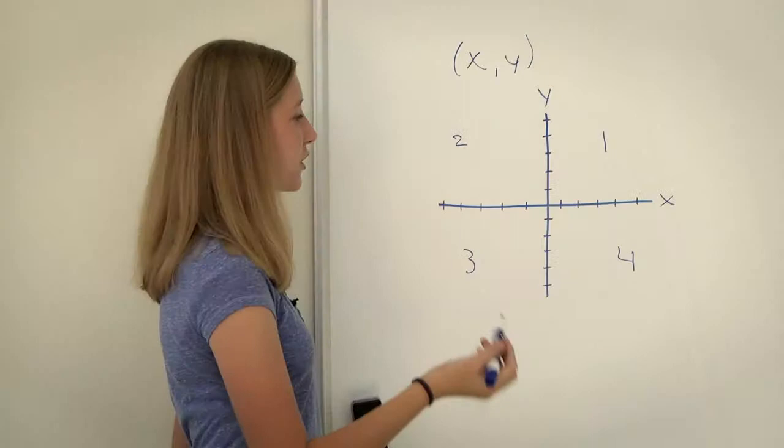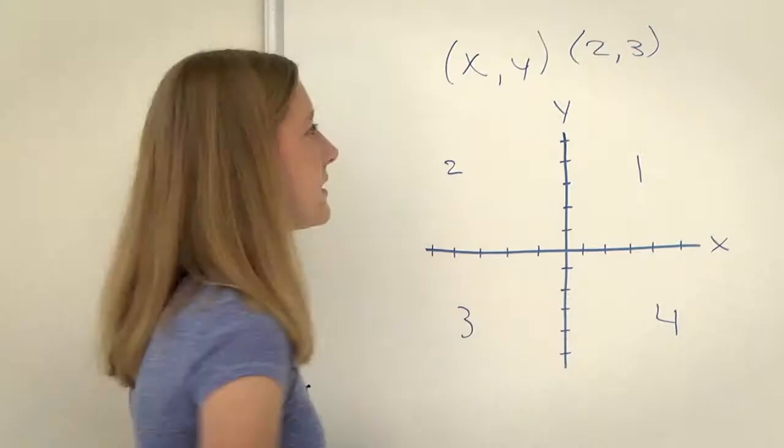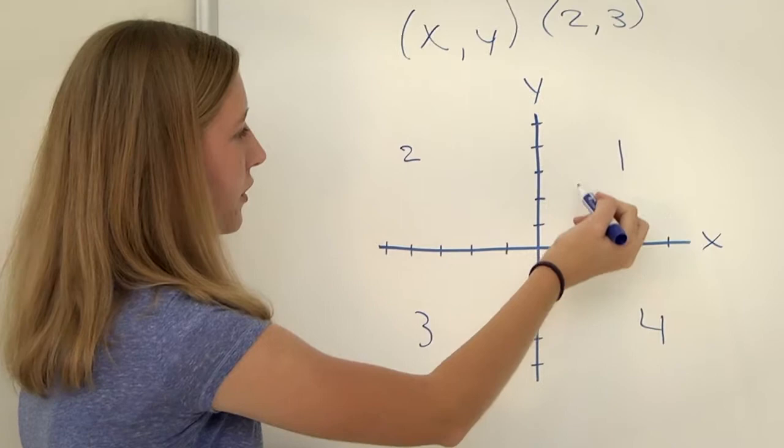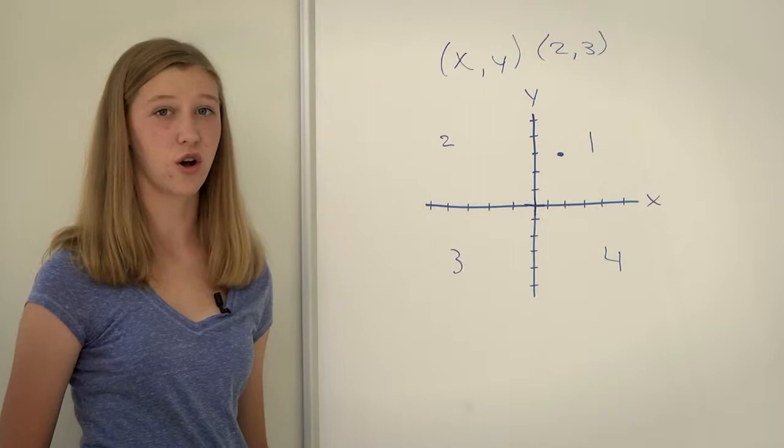In order to graph a point, you trace along the x-axis and along the y-axis to place your point. An example point is (2,3). This means that we have to go two along the x-axis and then up three along the y-axis to place our point.